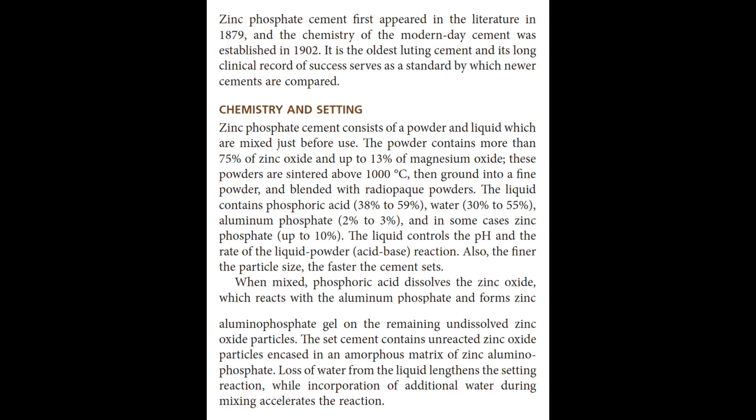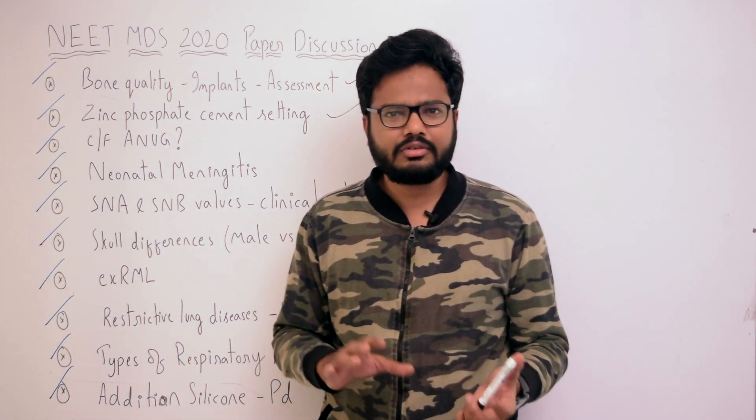When mixed, phosphoric acid dissolves the zinc oxide, which reacts with aluminium phosphate and forms zinc aluminophosphate gel on the remaining undissolved zinc oxide particles. The set cement contains unreacted zinc oxide particles encased in an amorphous matrix of zinc aluminophosphate. This is the key information pertaining to the setting of zinc phosphate cement.